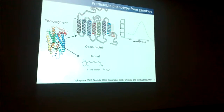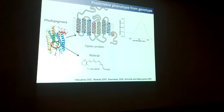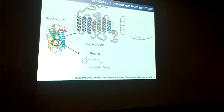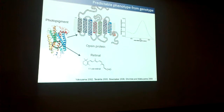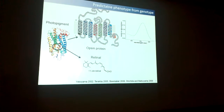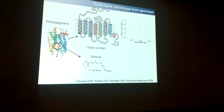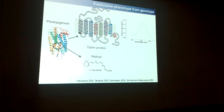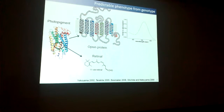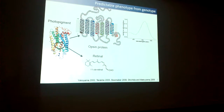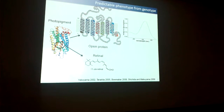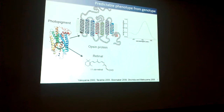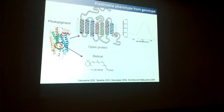As everybody explained before, we know a lot about opsins, and opsins are the few proteins for which we can somehow predict the phenotypic consequences of amino acid substitutions. Just a reminder that opsins are the protein components of photopigments.